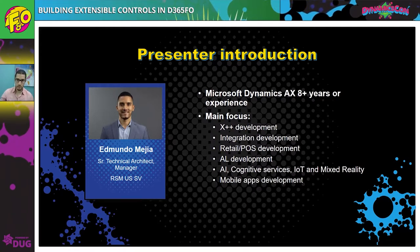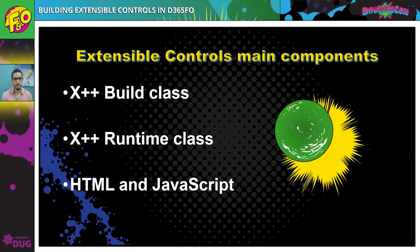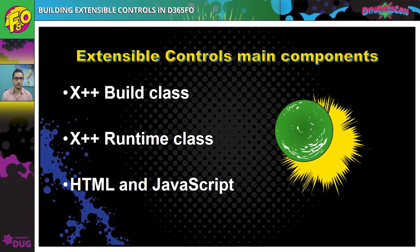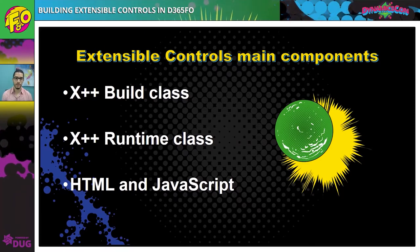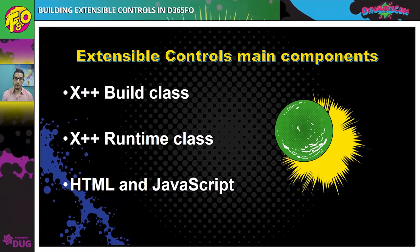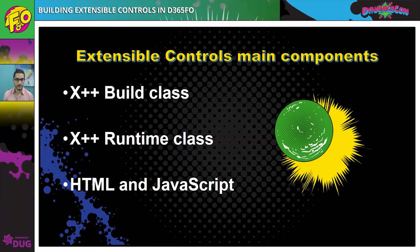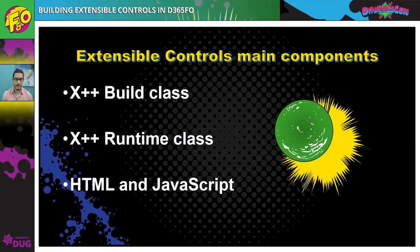Going back on track, we're going to talk about extensible controls today. So what are extensible controls? Extensible controls are application controls that you can create using the same tools Microsoft does. There are three main components we need to be aware of when creating extensible controls. The first one is the X++ build class, which allows the developer to define properties on the properties sheet in Visual Studio — in the designer.